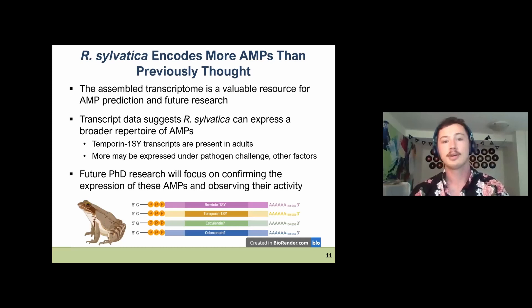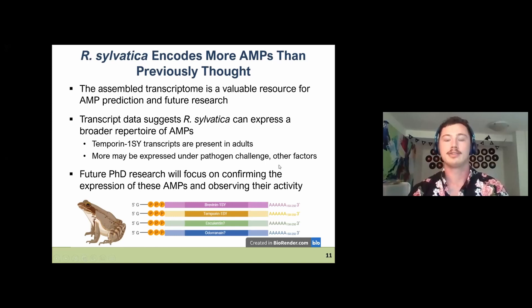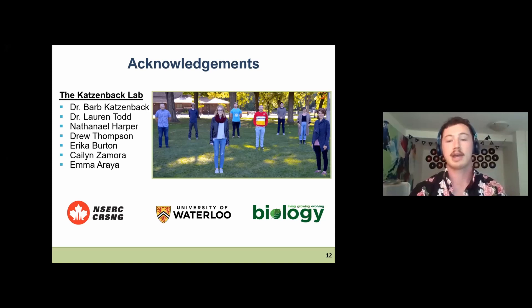To summarize: the assembled transcriptome is of good quality and is a valuable resource for AMP prediction and future research on Rana sylvatica skin. Transcript data suggests Rana sylvatica can express a broader repertoire of AMPs, at least transcriptionally. Notably, Temporin-1SY transcripts were present in adults, which was previously unrecognized. Additional AMPs may only be expressed in response to pathogen challenges or other factors. Future PhD research will focus on confirming AMP expression in live individuals and observing their activity against pathogens. Acknowledgment to the Katzenbach lab and funding from NSERC and the University of Waterloo.